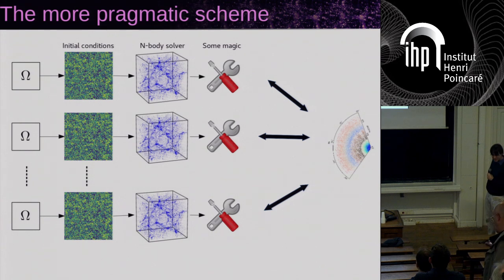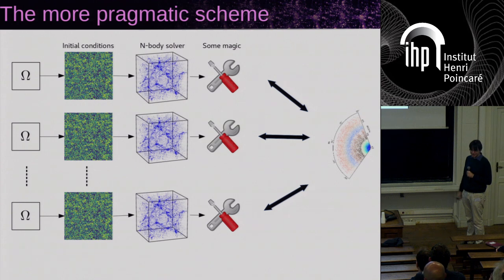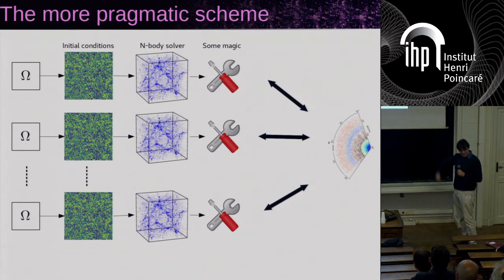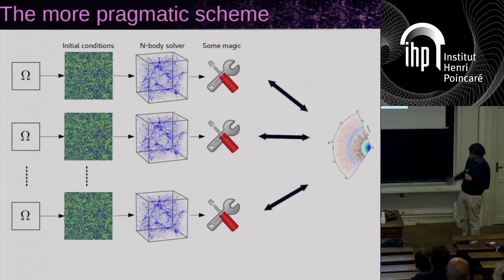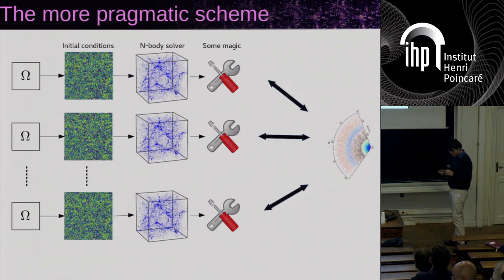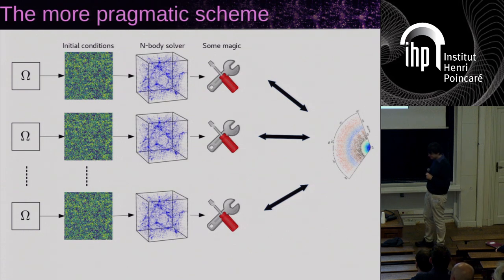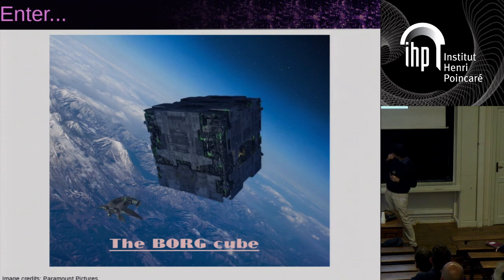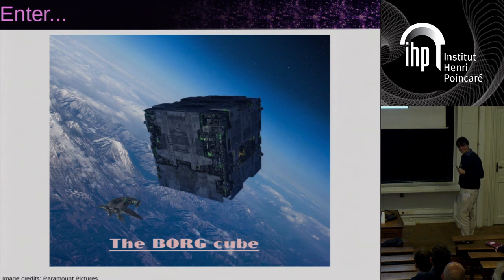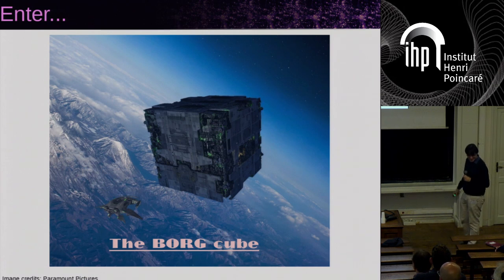In practice, what happens is we have initial conditions, an approximate N-body solver, and some black magic — different screws working to try to map to the dataset. The idea is: can we make this completely automated so that we manage to do good inference on this part? That's why we built the Borg cube. The idea is that you cannot resist — you will be assimilated anyway. That was the motto behind the name.